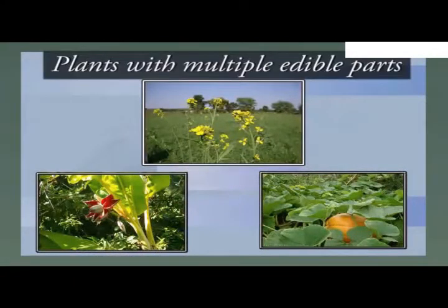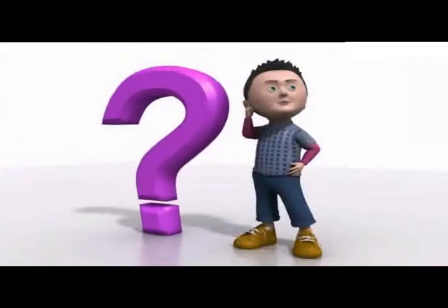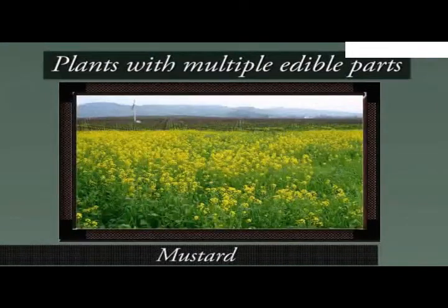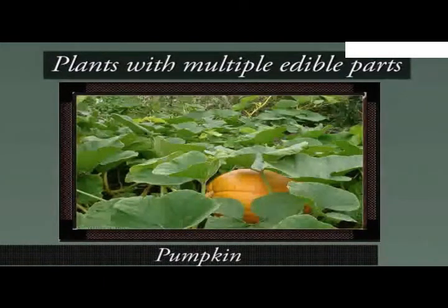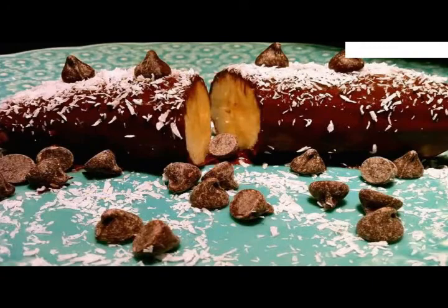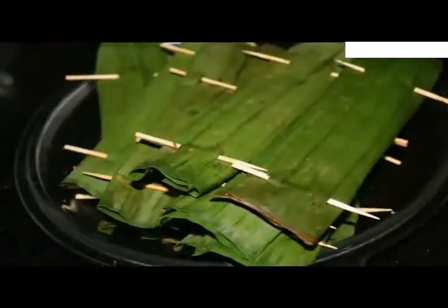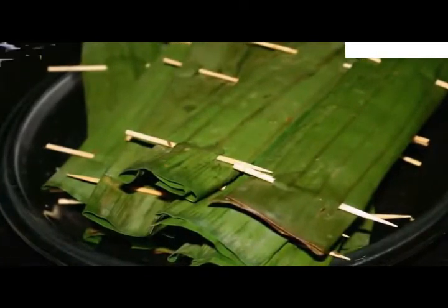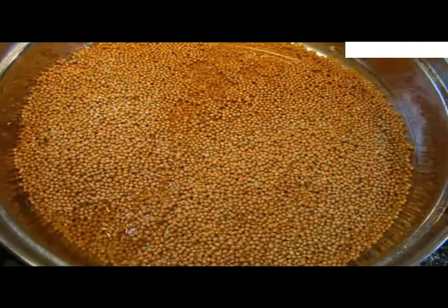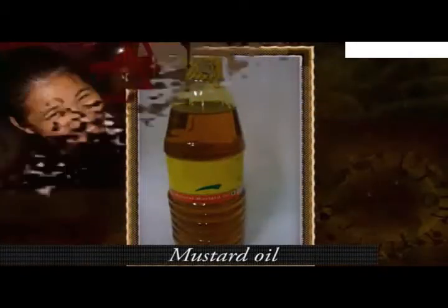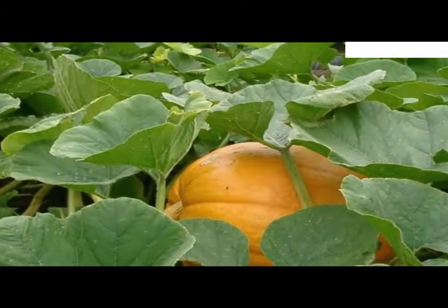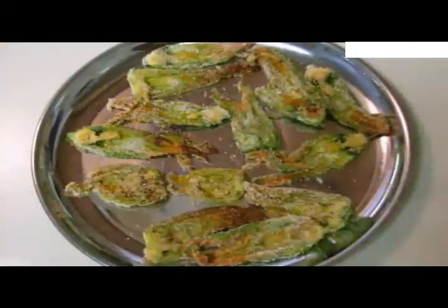It is interesting to know that some plants have multiple edible parts. Can you think of any such plant? Banana, mustard and pumpkin are some examples of plants with many edible parts. The fruit of banana is used to prepare dessert or eaten as such, while the stem and leaves are also used to prepare vegetable dishes. Similarly, in the mustard plant, the leaves are eaten as a vegetable, seeds are used for flavoring, and the mustard oil derived from seeds is used for cooking food. Likewise, in pumpkin, not only the fruit but also the flowers and leaves are consumed as vegetable.